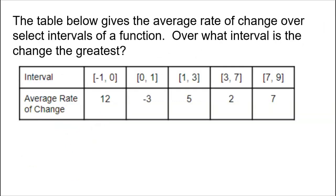The next question: a table gives the average rate of change over select intervals of a function — over what interval is the change the greatest? We're given five consecutive intervals that are not equal in length: negative 1 to 0 (width 1), 0 to 1 (width 1), 1 to 3 (width 2), 3 to 7 (width 4), and 7 to 9 (width 2). Most kids just grab the first interval because its average rate of change is 12, which is the biggest number — but the question asks for the greatest change, not the greatest average rate of change.